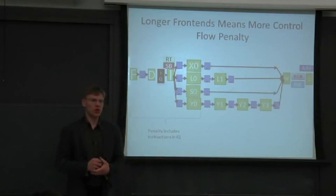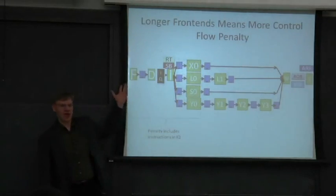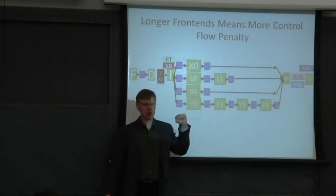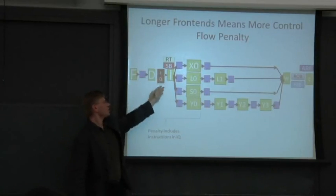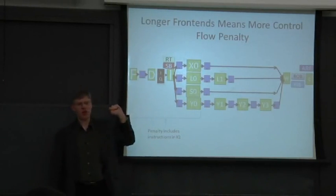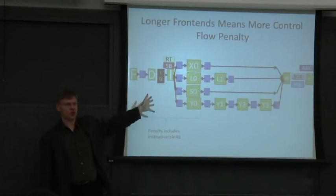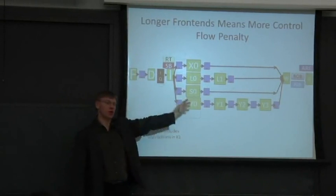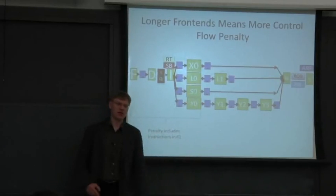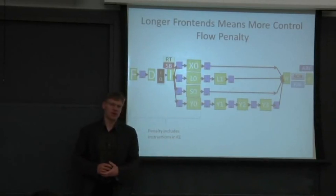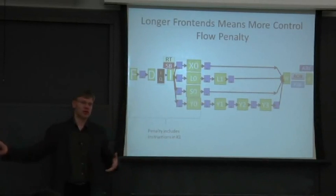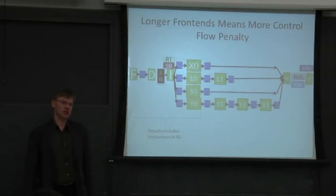When you go to these out-of-order processors, even with a seemingly short or easy pipeline, more instructions can get queued up into these structures, especially if you have a queue. This effectively lengthens the front of your pipeline, and if you mispredict or fetch the wrong instructions relatively often, you'll be killing lots of instructions and doing a lot of extra work you didn't want to do.